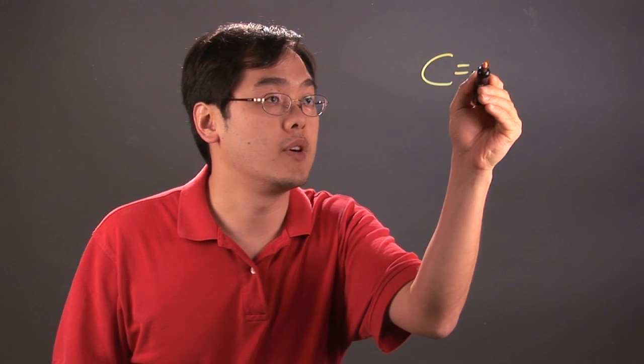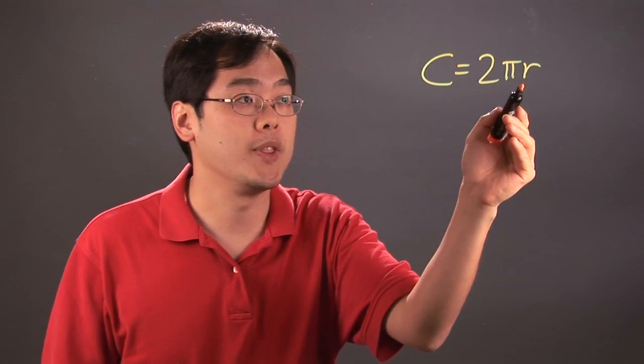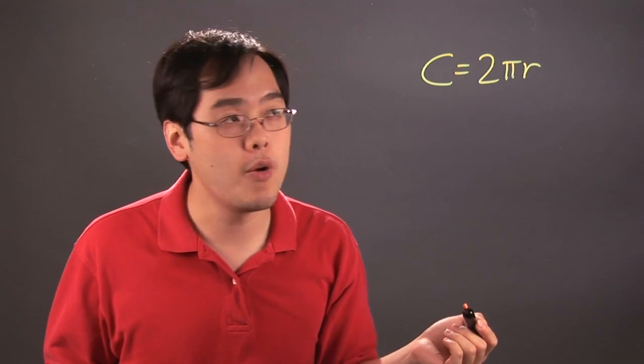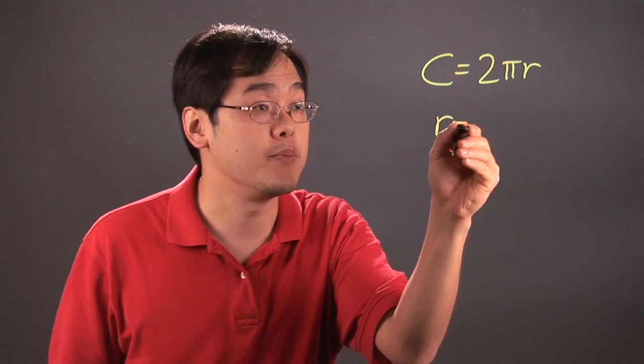So the circumference formula for a circle is 2 pi r, r being the radius, pi being that number that you know about, and of course the number 2. So when it comes to using fractions, your radius would pretty much have to be a fraction.